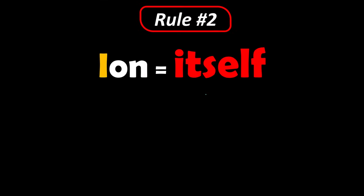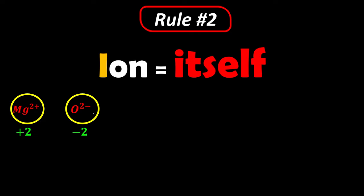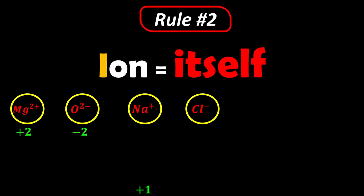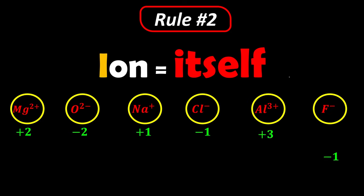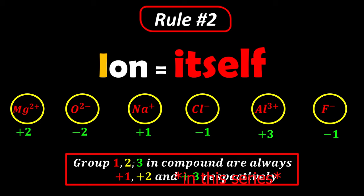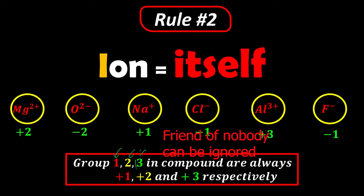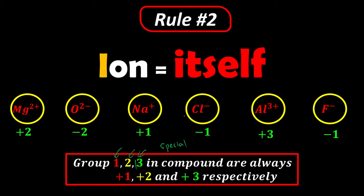Rule number two: I means ions. It tells us that the oxidation number for monoatomic ions is the same as their own charges. For instance, magnesium ions have a positive two charge, so the oxidation number must be the same. Similarly for sodium ions — it's group one, so it's positive one. Also, elements from group 1, group 2, and group 13 are special: no matter where they are, their oxidation number is always positive one, positive two, and positive three respectively.